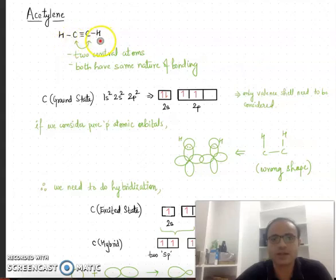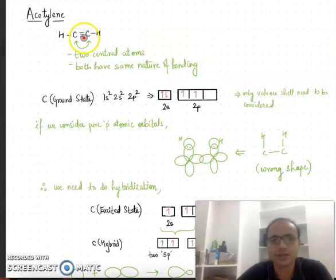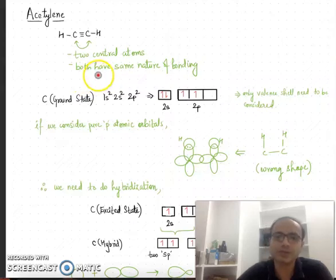If you look at ethyne, it contains two central atoms — both are carbon atoms. Since the nature of bonding on these two carbon atoms is the same, we just need to consider one central atom and look at the type of bonding happening there, and automatically we will be able to find out the shape of the whole molecule.